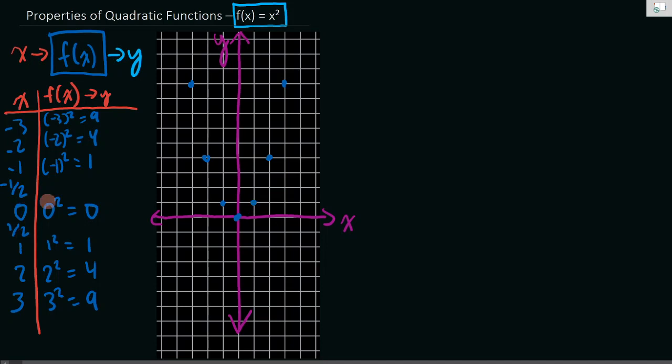Now why do we have this half point here? I want to know how this function looks as it gets close to the x-axis. Is it going to go down to a point and go up sharply, or is it going to go down to a nice, even, smooth, flat-bottomed curve? So (1/2)² is 1/4, and (-1/2)² is also 1/4.